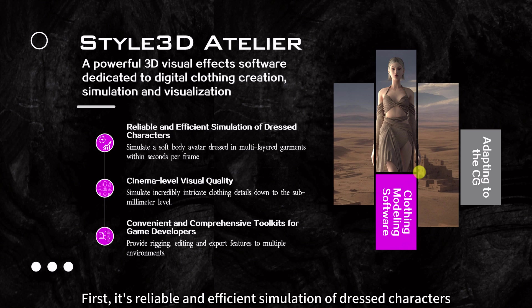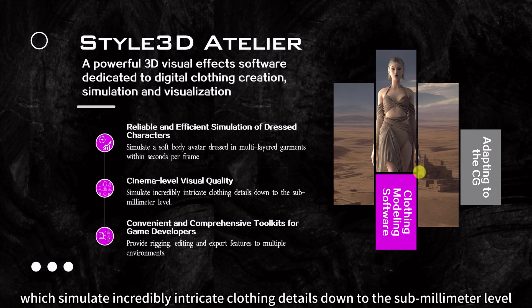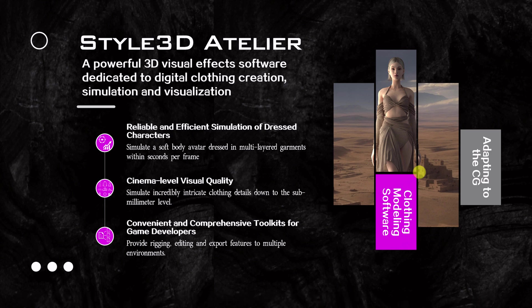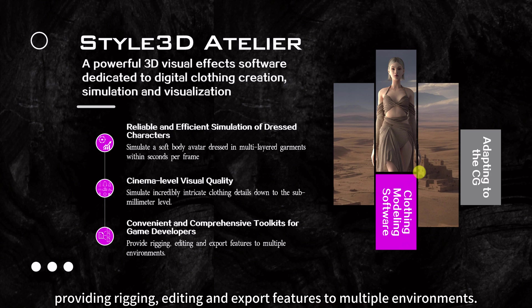Part 1: Atelier Product Introduction. Style 3D Atelier is a powerful 3D visual effects software dedicated to digital clothing creation, simulation, and visualization. First, it offers reliable and efficient simulation of dressed characters. Next, it has cinema-level visual quality, simulating incredibly intricate clothing details down to the sub-millimeter level. Finally, it provides convenient and comprehensive toolkits for game developers, including rigging, editing, and export features to multiple environments.